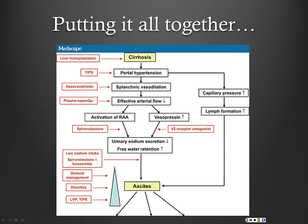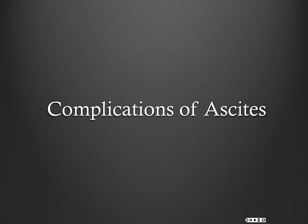If patients develop hyponatremia, we can use V2 receptor antagonists to help combat that. But a subset of patients still won't respond to these measures — that's when we talk about TIPS and eventually liver transplantation for appropriate candidates. Liver transplant is really ultimately what they need.